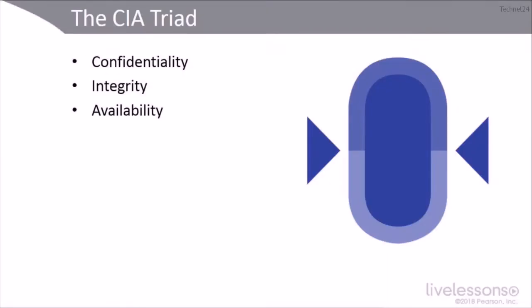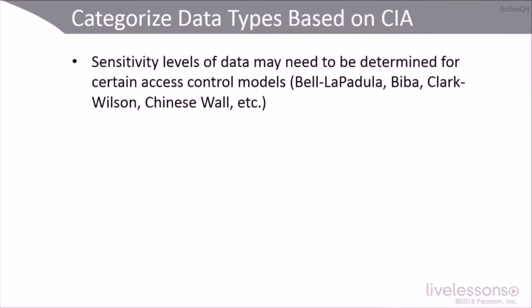We've got to know the CIA triad, and we're going to see it in action as we move through different aspects of this course. We need to be able to categorize data types based on the impact levels of CIA. The sensitivity levels of data may be determined for certain access control models like MAC models — for example, Bell-LaPadula, Biba, Clark-Wilson, and the Chinese Wall.